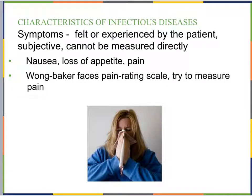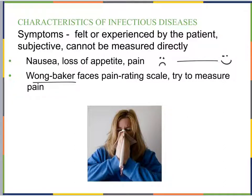Symptoms of disease are felt or experienced by the patient, but they are subjective — you can't measure them as a clinician. Examples include nausea, loss of appetite, and pain. That's why we have pain scales like the Wong-Baker Faces Pain Rating Scale — to try to give something more measurable to a clinician, even though it's still completely subjective.